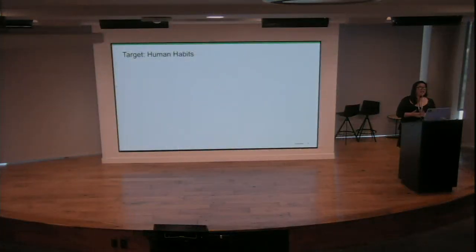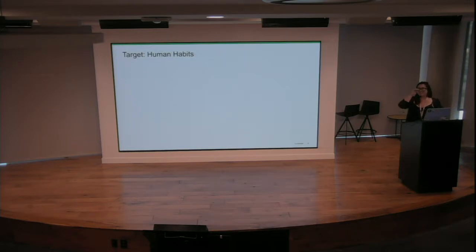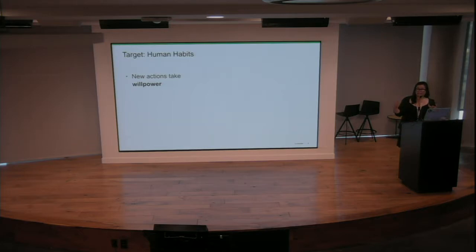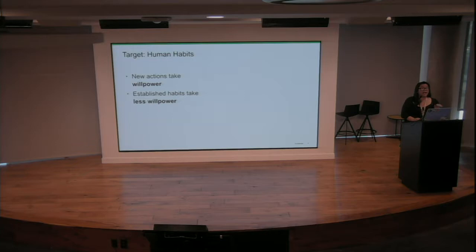In this case, my target was human habits. Human habits allow us to be less exhausted as humans. There are three main things to know about habits: new actions take a lot of willpower — for example, if you say hello to me in French, it takes a couple of extra cycles to realize you're saying hello and that I should respond. On the other hand, established habits take less willpower — you say hello to me and it's an automatic response, I say hello back without thinking twice.